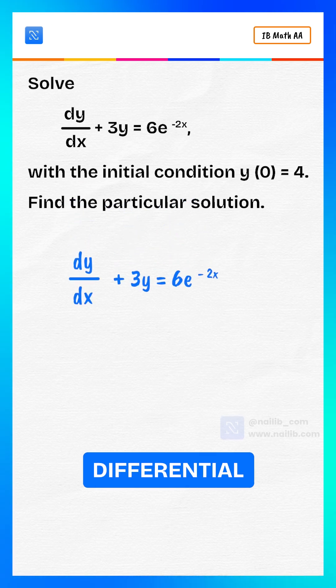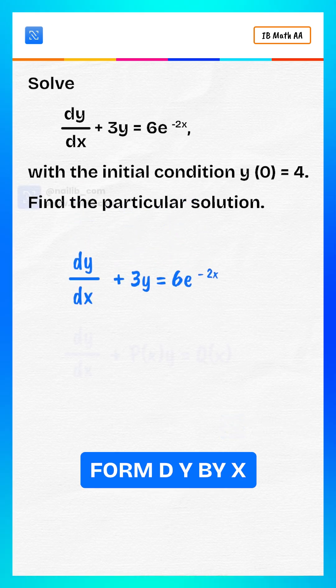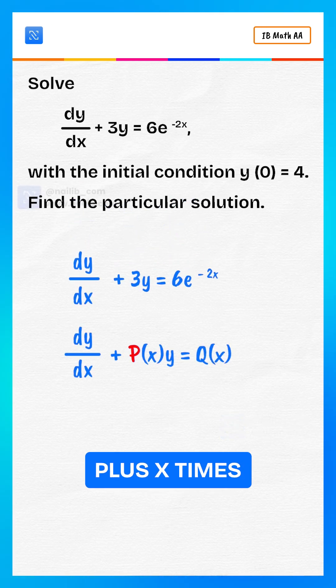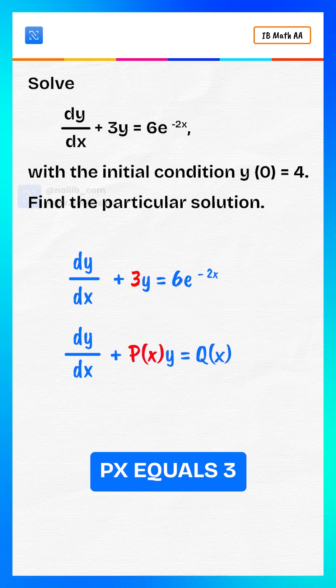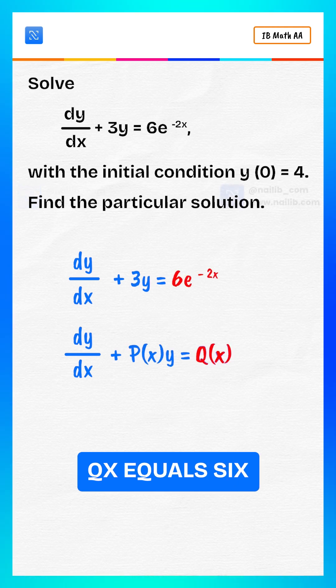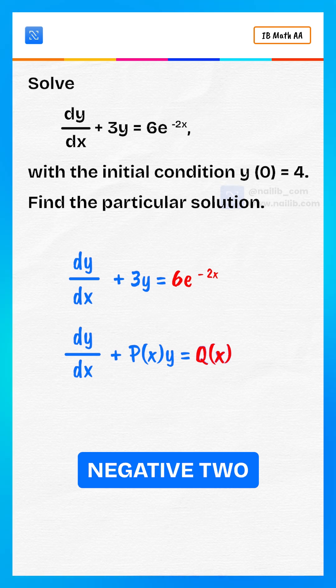This is a linear first-order differential equation of the form dy by dx plus px times y equals qx, where px equals 3 and qx equals 6e to the power of negative 2x.